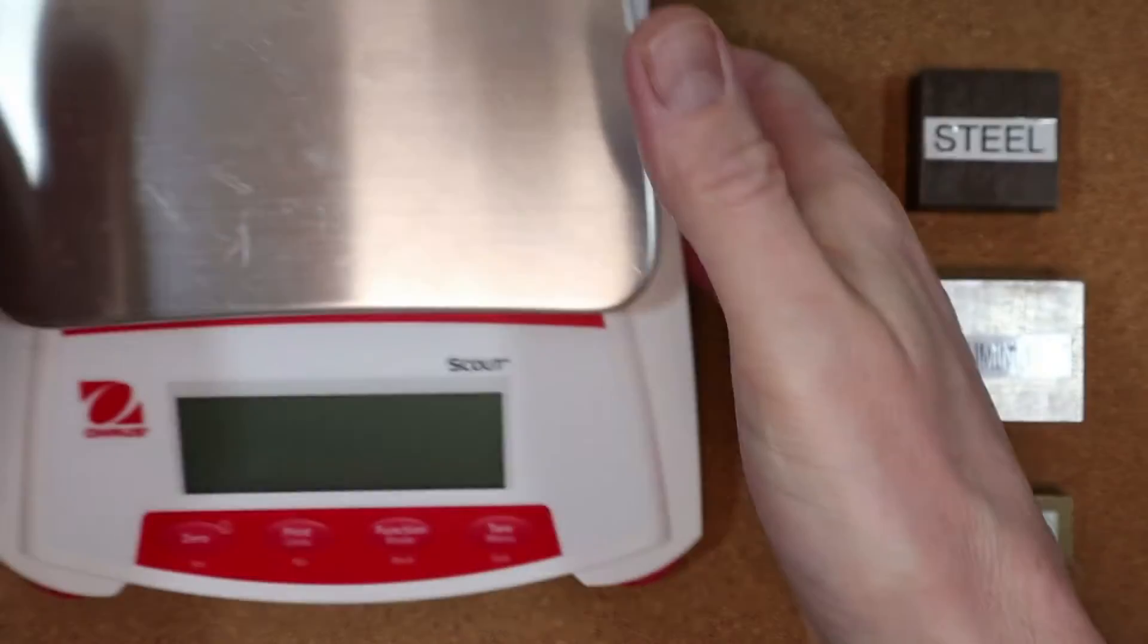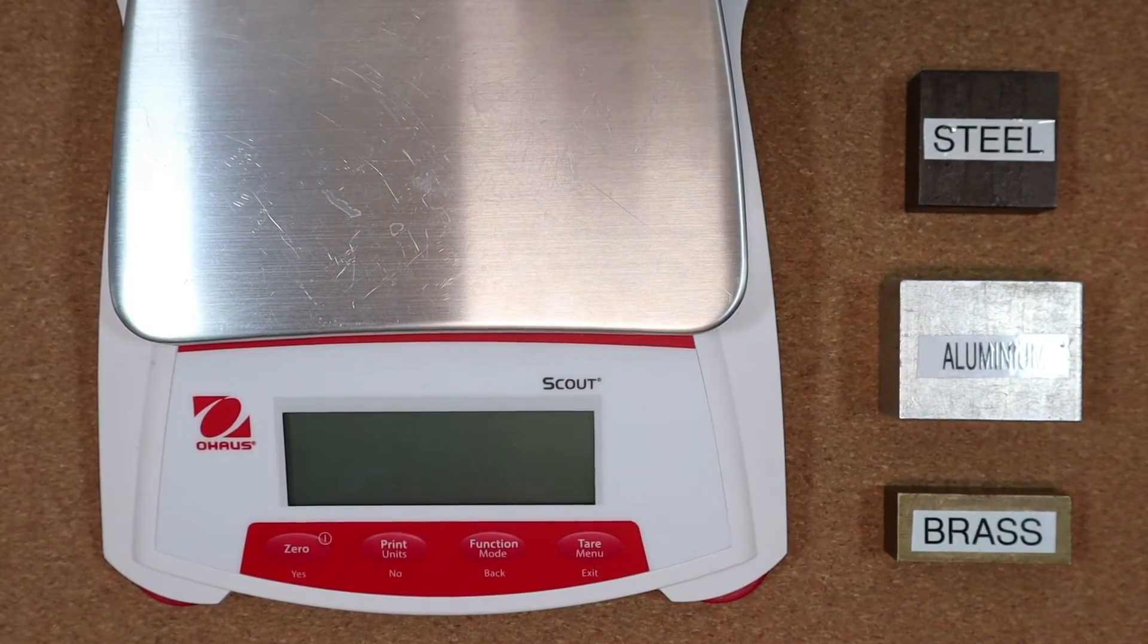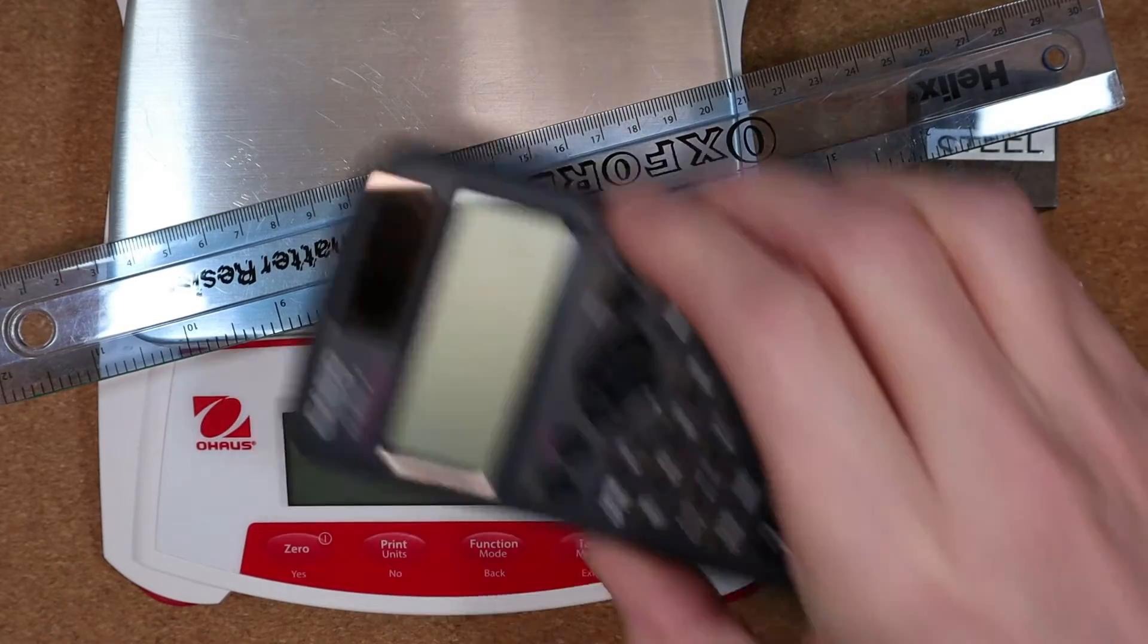What we'll need for the experiment then is our three blocks, an electronic balance, a ruler, and a calculator. Let's get weighed.